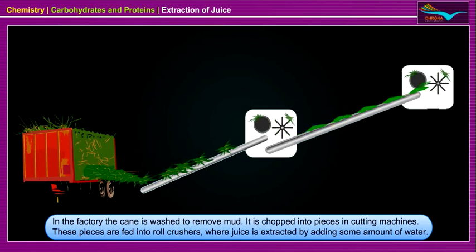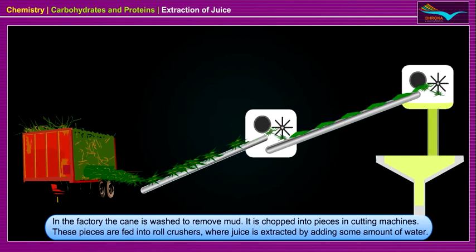In the factory, the cane is washed to remove mud. It is chopped into pieces in cutting machines. These pieces are fed into roll crushers where juice is extracted by adding some amount of water.